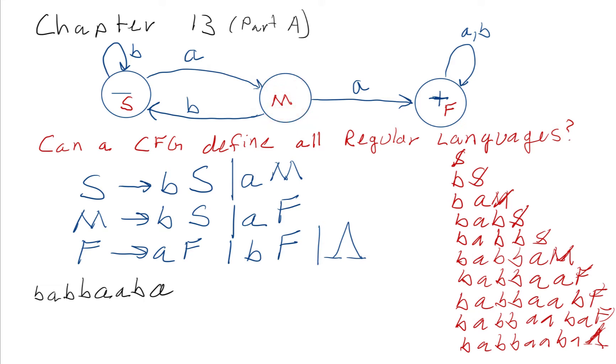The non-terminal at the end of this word kind of tells us what state we're in. When we read a b next, from this state, we go back here and go to state S. Then, when we read a b again, we go back to state S, and then a tells us to go to state M, and then another a tells us to go to state F.